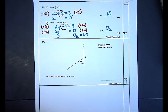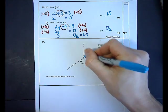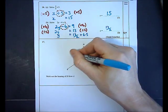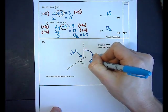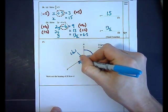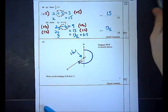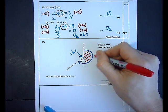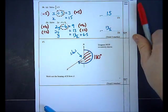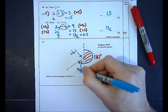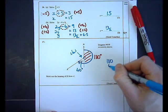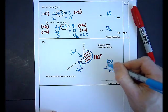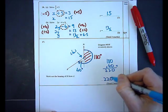In question 17 I'm asked to work out the bearing of B from A. Bearings are measured clockwise from north. This side of the line is 180 degrees, and I add on the 40 degrees given, so 180 plus 40 gives a bearing of 220 degrees.